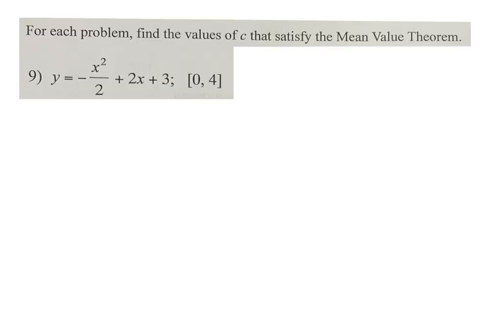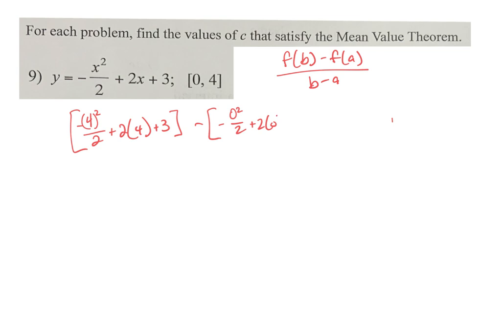Mean Value Theorem. For this one, you are finding the mean value. So it's f of b minus f of a all over b minus a. That's your mean value. So you actually want to plug it in. So we're going to plug in a 4. That's our f of b minus f of a. If we plug in a 0.